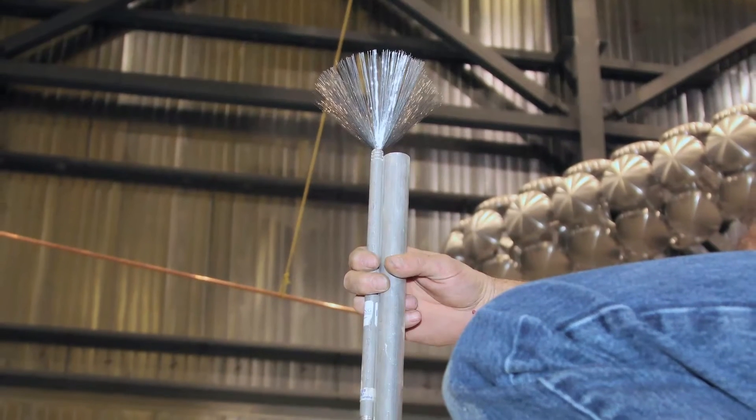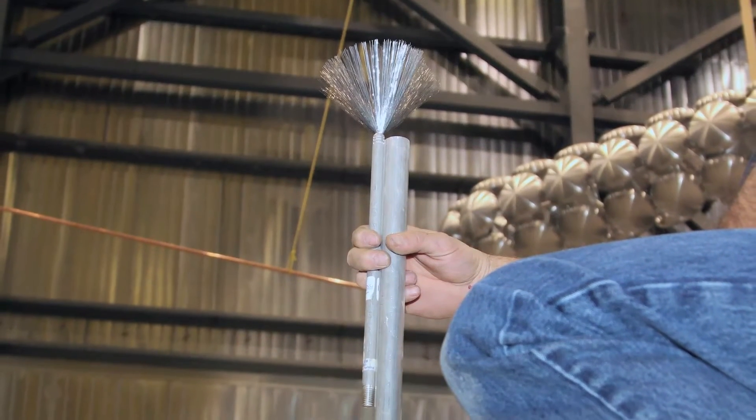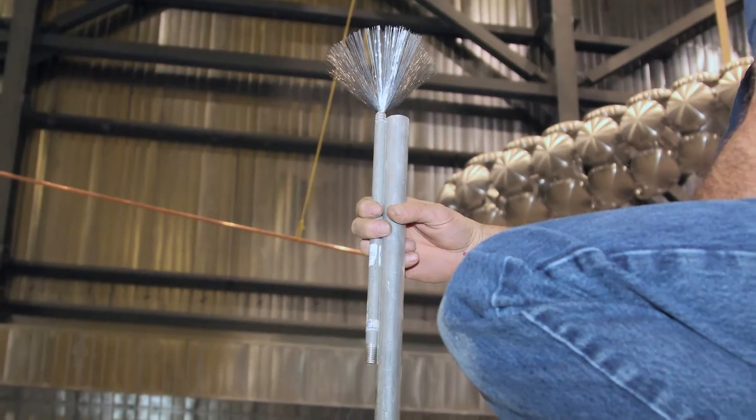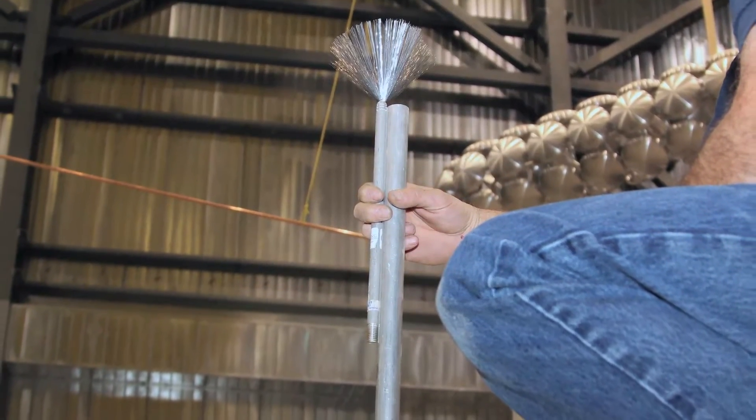A commercially available static dissipator is bonded to the grounded center pipe on the outside of the tank. Sparking continued to appear on that same center pipe on the inside of the tank down to an applied voltage of 350 kilovolts.